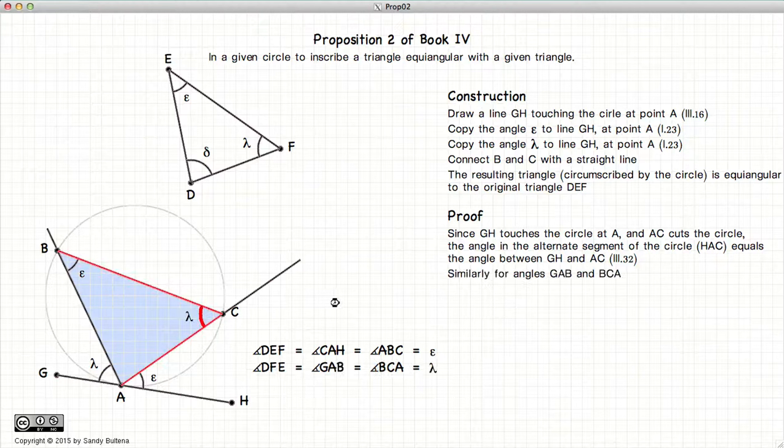Similarly, the angle here, BCA, is equal to lambda. So now we have a triangle that has epsilon and lambda as two of its angles.